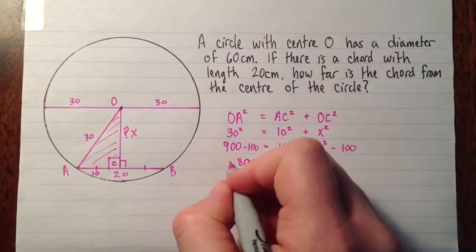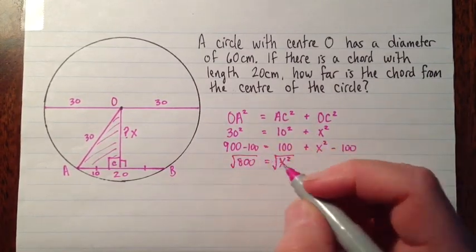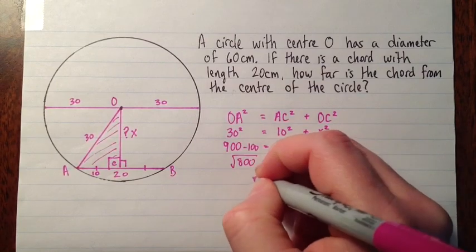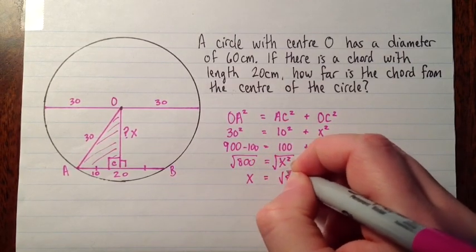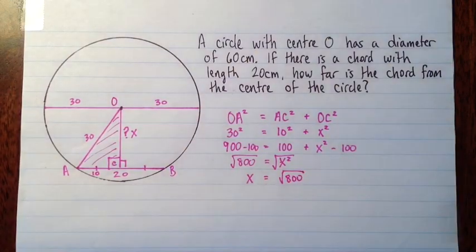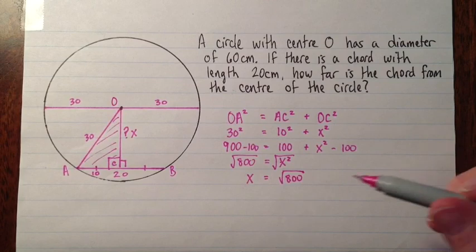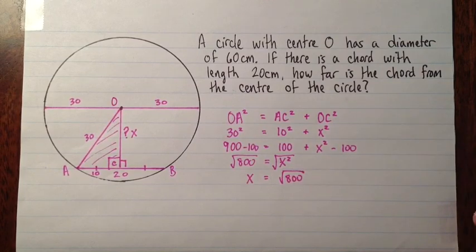So to isolate X, I'll square root both sides. And we have X equals root 800. Now sometimes the question will ask you for a decimal approximation, and it'll tell you how to round it. But here I'm going to continue and simplify this radical.